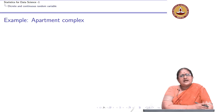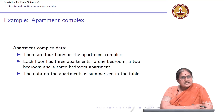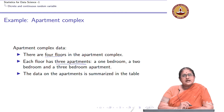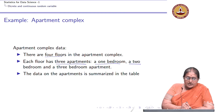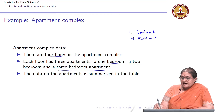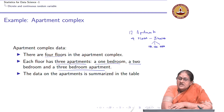Let us motivate and understand this through an example. Let us look at an apartment complex with 4 floors, where each floor has 3 apartments — a 1-bedroom, a 2-bedroom, and a 3-bedroom apartment. So there are 12 apartments in total: 4 floors, 3 apartments per floor.